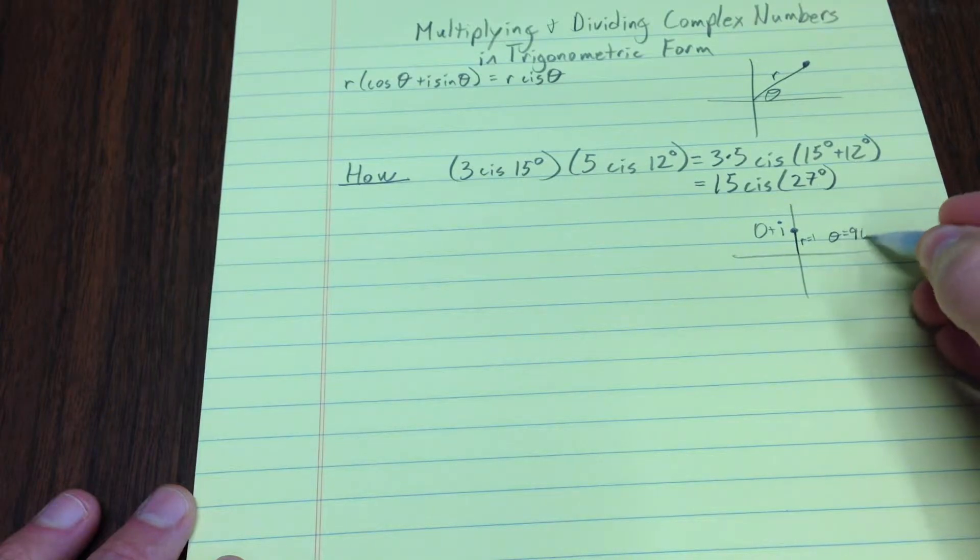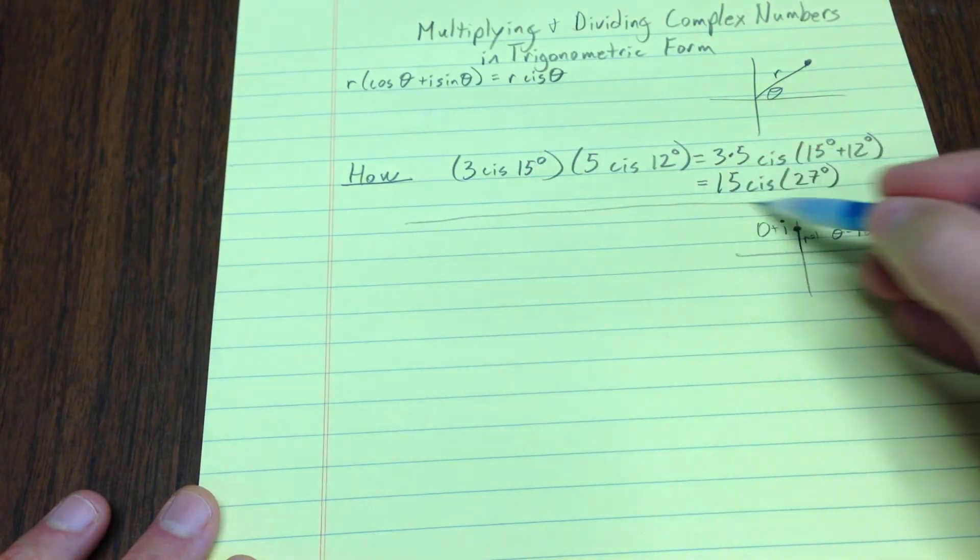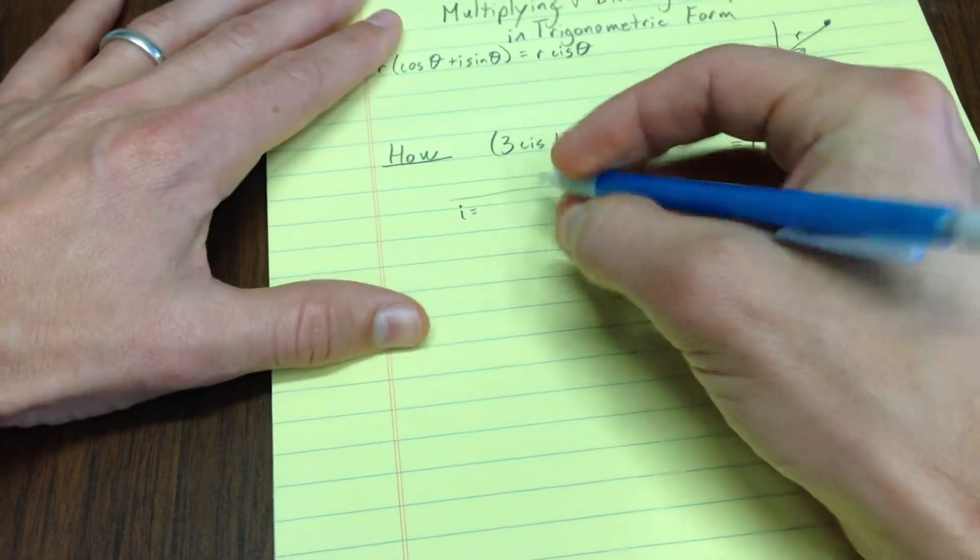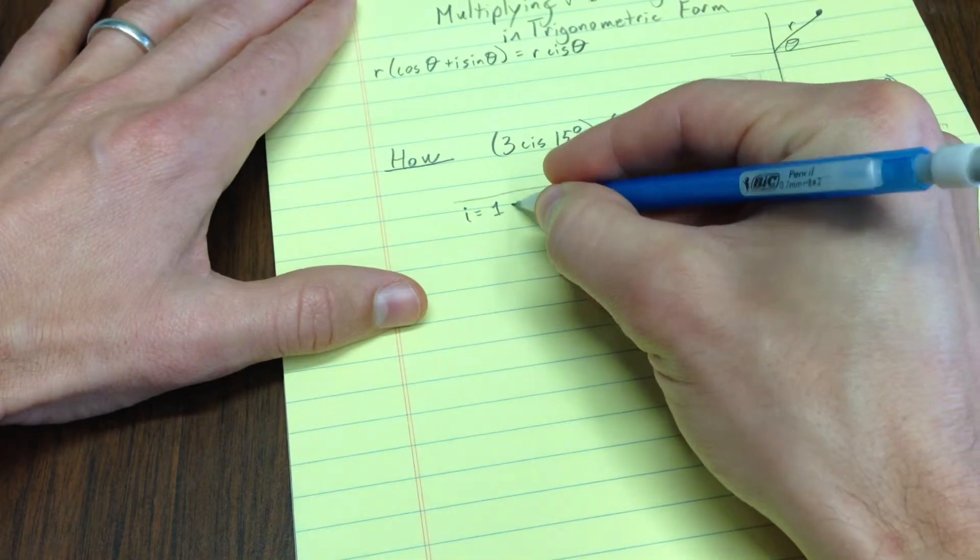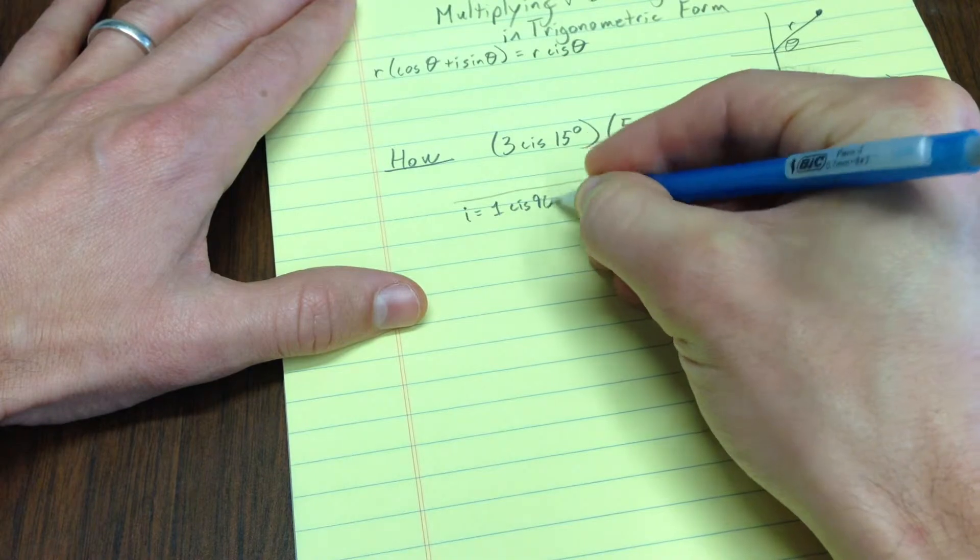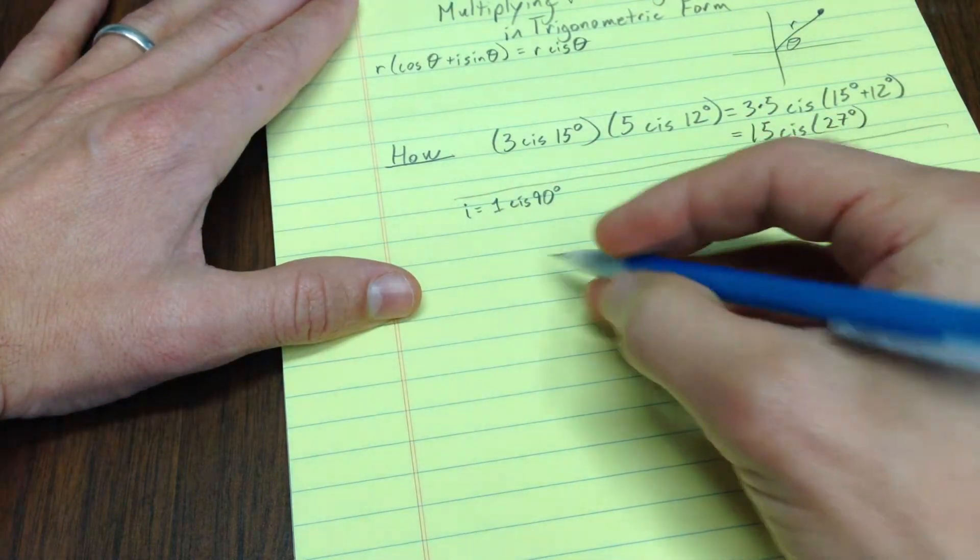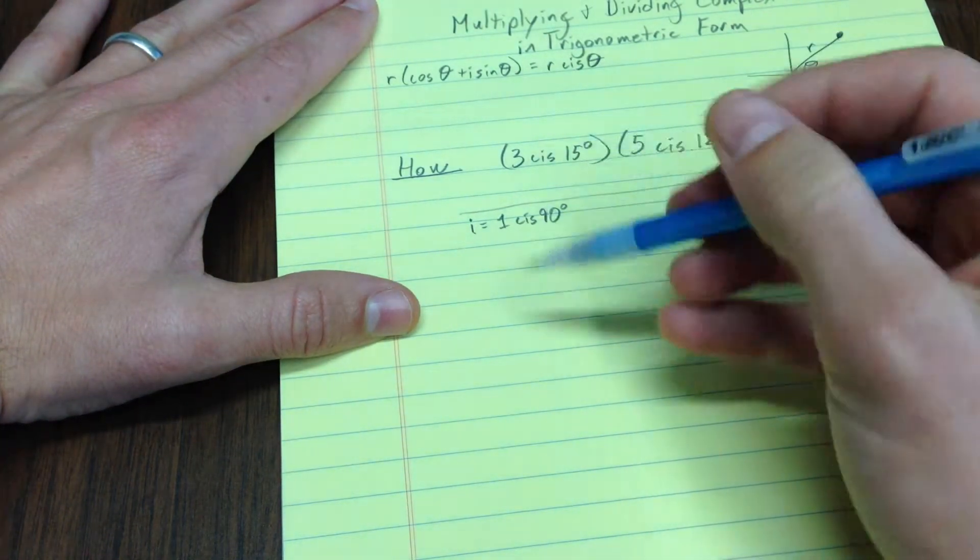Theta equals 90, right? So if you wanted to write i, this is another example by the way, i happens to be writable as 1 cis 90. Let me just check and see that this rule that I told you here actually works.